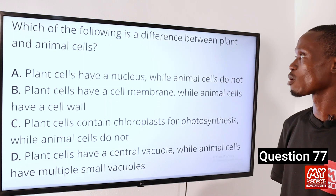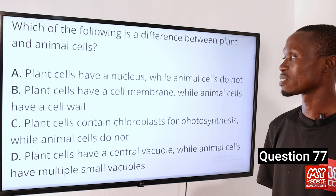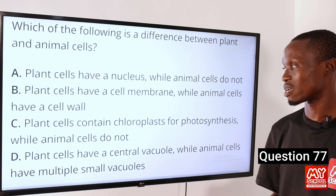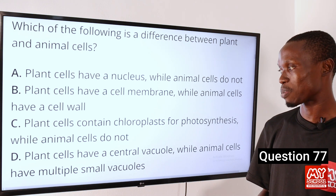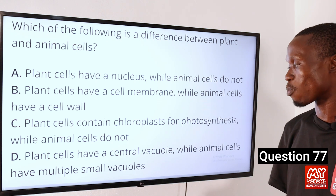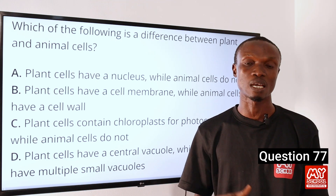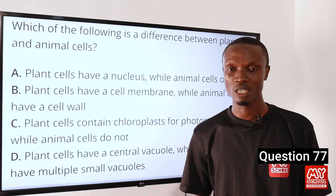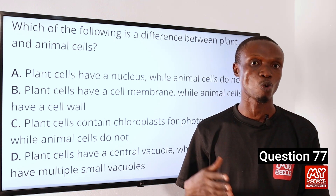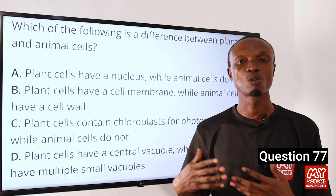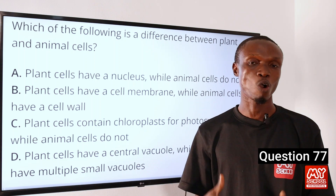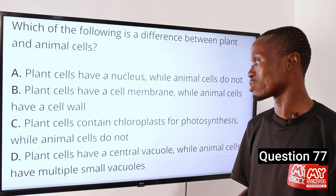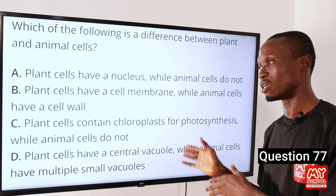Question 77: Which of the following is a major difference between plant and animal cells? A: Plant cells have a nucleus while animal cells do not. B: Plant cells have a cell membrane while animal cells have a cell wall. C: Plant cells contain chloroplasts for photosynthesis while animal cells do not. D: Plant cells have a central vacuole while animal cells have multiple small vacuoles. One of the major differences is that plant cells contain chloroplasts, which are organelles for photosynthesis, enabling plants to convert sunlight into energy-rich molecules. Animal cells do not contain chloroplasts and obtain energy through other means such as consuming organic matter. So option C is the correct option.